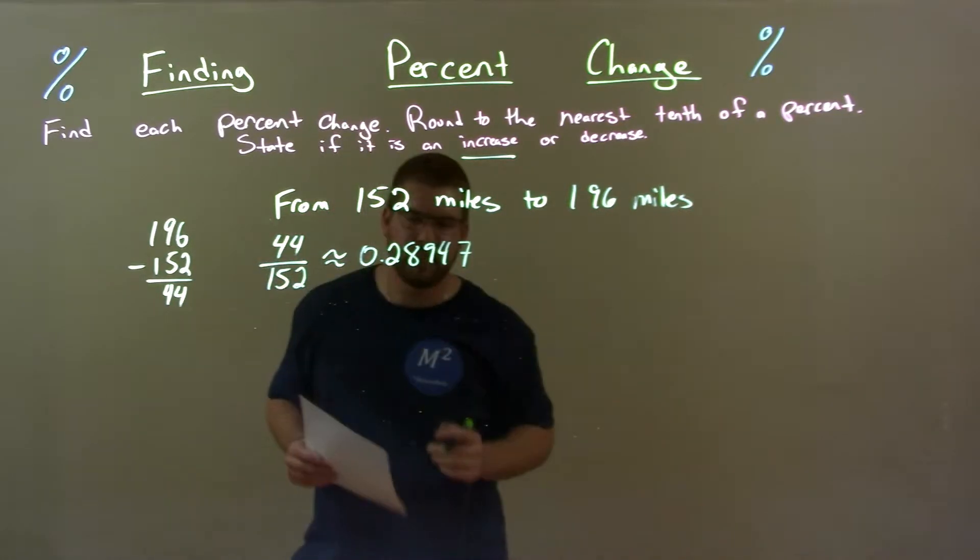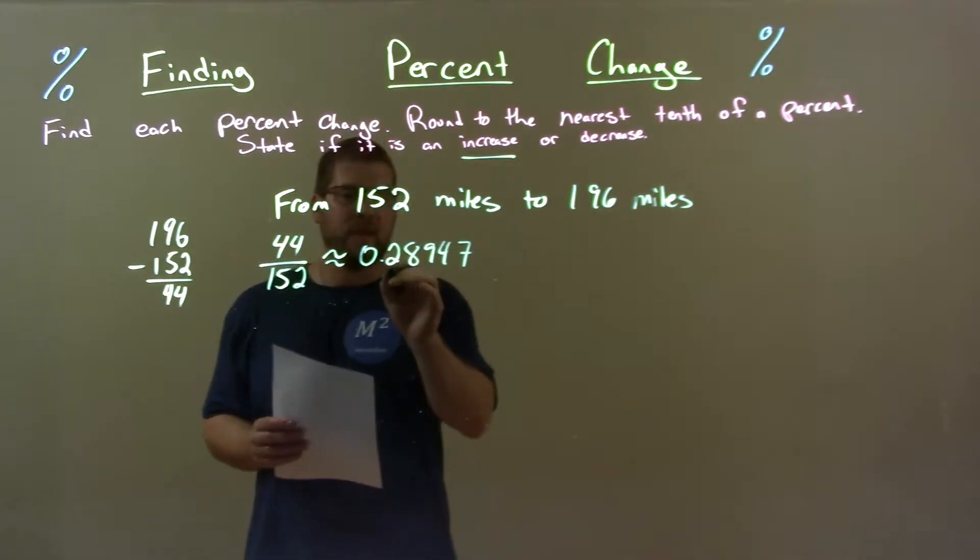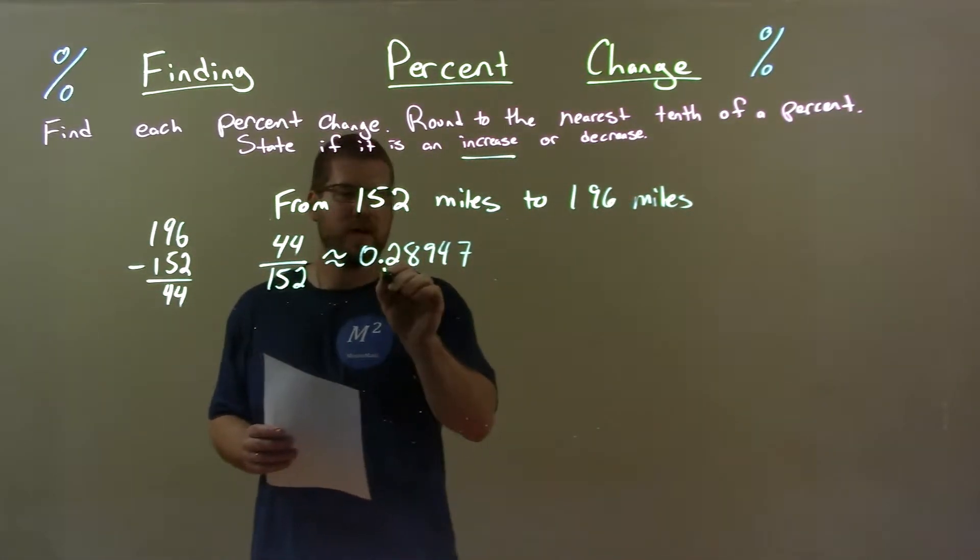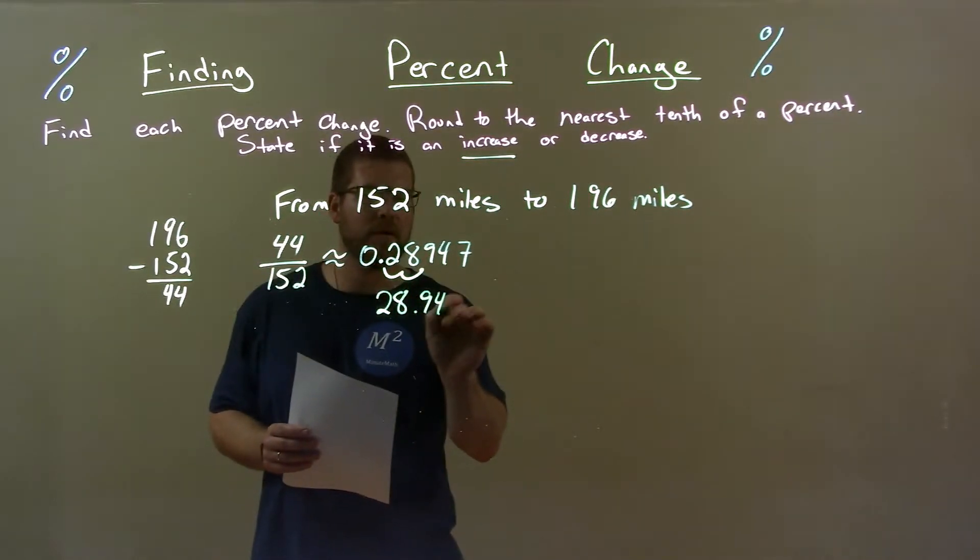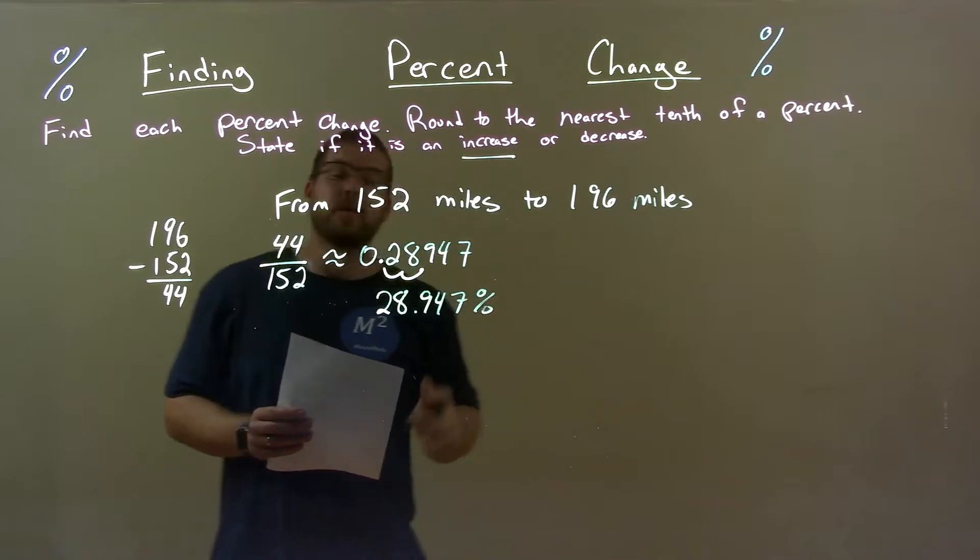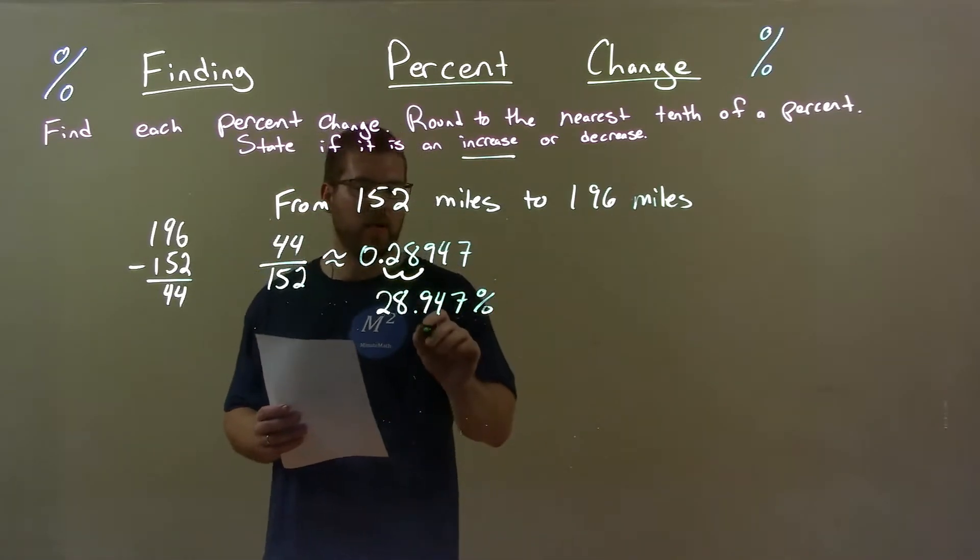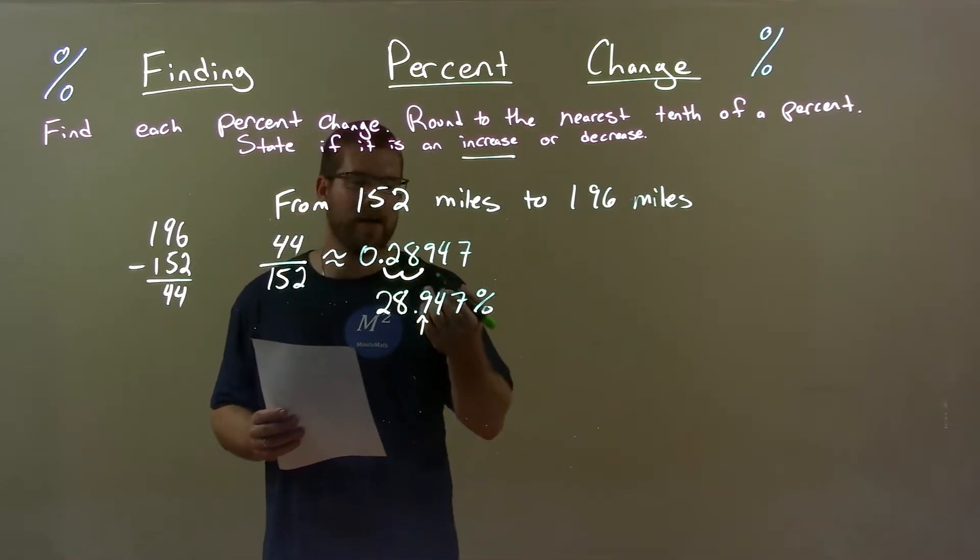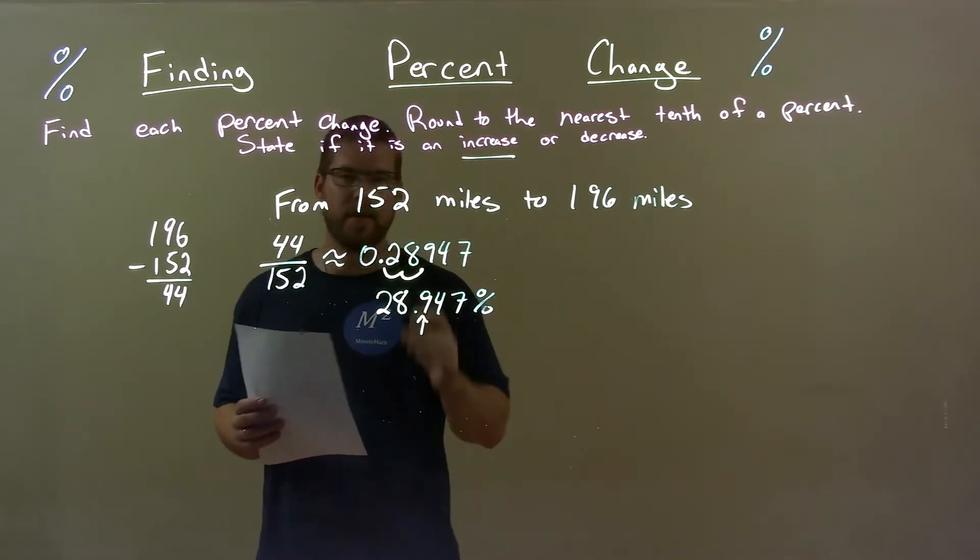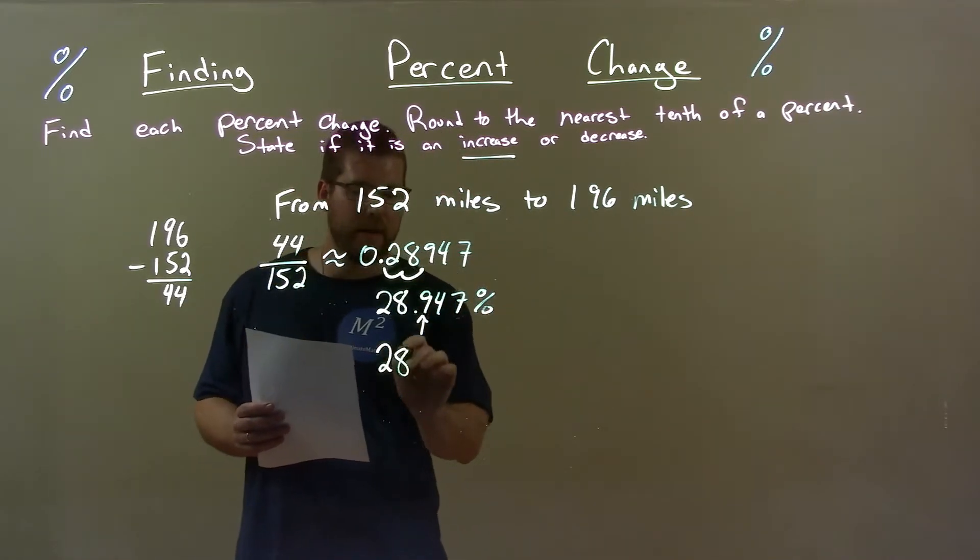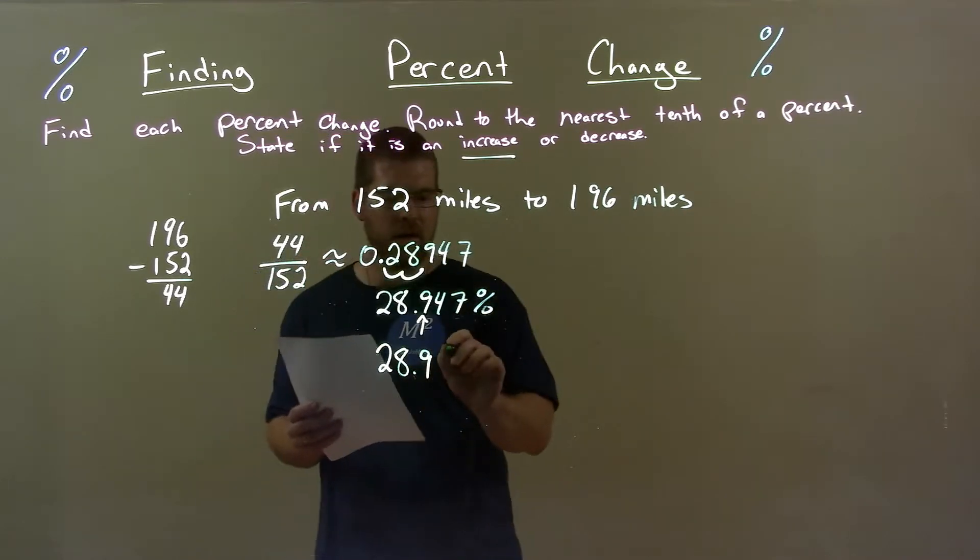Now let's write that as a percent. We take that decimal, two spots to the right gives us the percent. 28.947 percent. We got to round that. We look at the 9 and then we look to its right, there's a 4. The 4 causes the 9 to stay where it is in the tenth place, so we have 28.9. It's a percent.